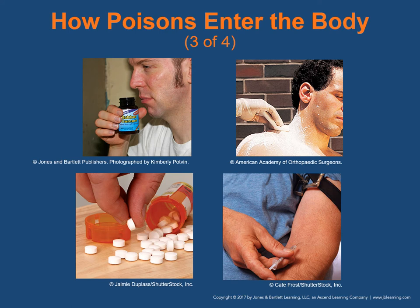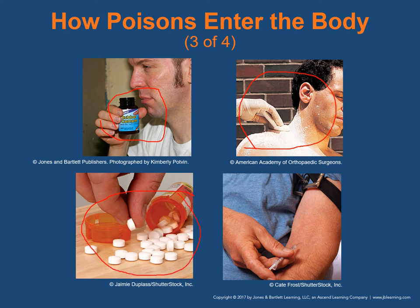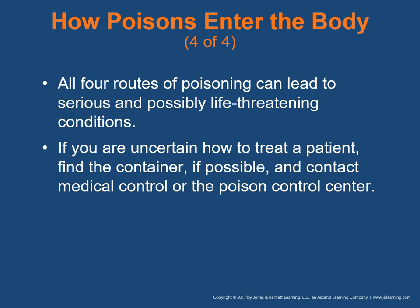For inhalation, we may see someone inhaling substances like rubber cement — huffing. For absorption, substances can get on the skin and absorb through the skin into the body's system. Ingestion is a very common route for poison administration. All four routes of poisoning can lead to serious and possibly life-threatening conditions. If you're uncertain how to treat a patient, find the container if possible and contact Medical Control or the Poison Control Center.